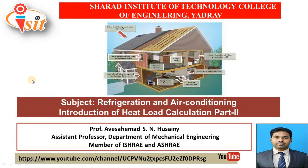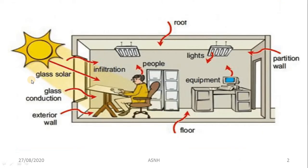The most important thing in case of heat load calculation is the primary function of the air conditioner, which is to maintain conditions. We must maintain two conditions as far as the air conditioning system is concerned. The first is conditions conducive to human comfort, and the second is conditions required by the product or process within the space. We must maintain that cooling effect within the particular area throughout the year.